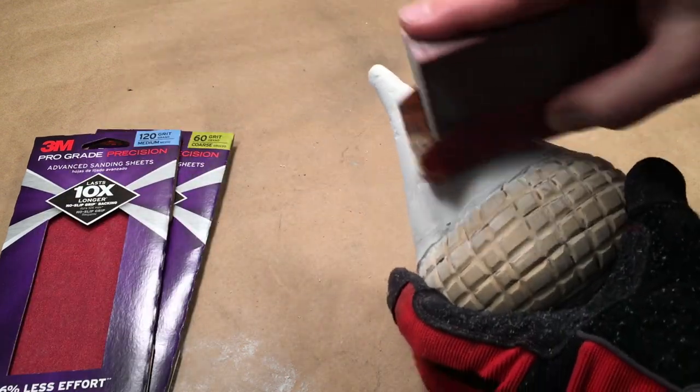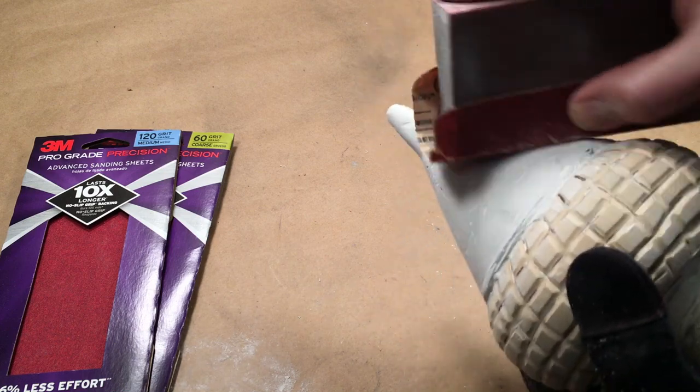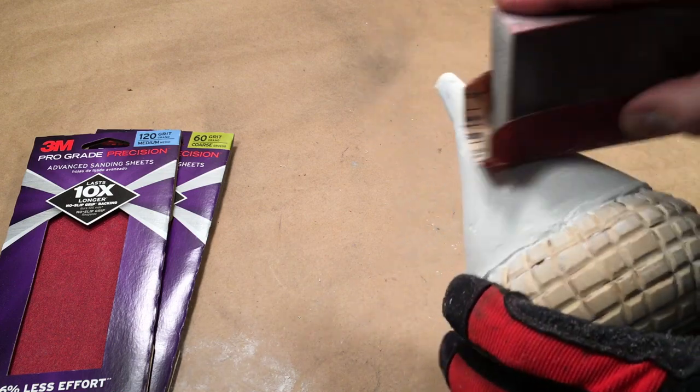Use 120 and 220 grit sandpaper. Be sure to sand down both the funnel side and the PVC side.